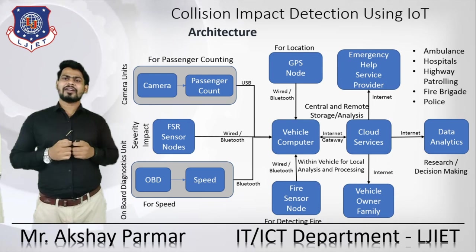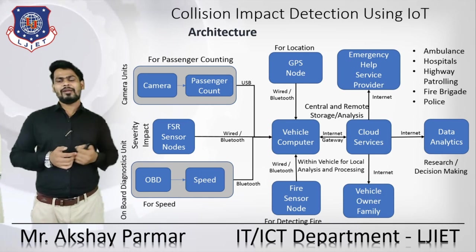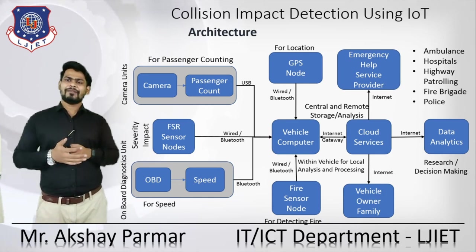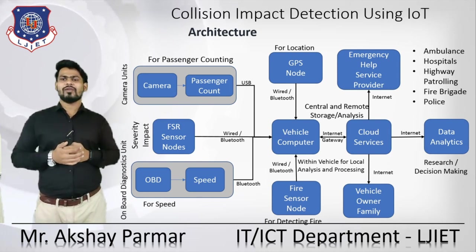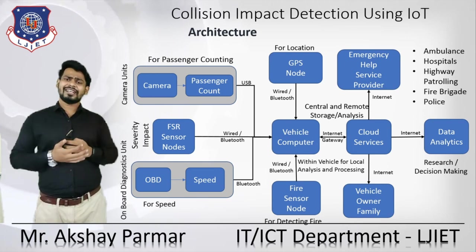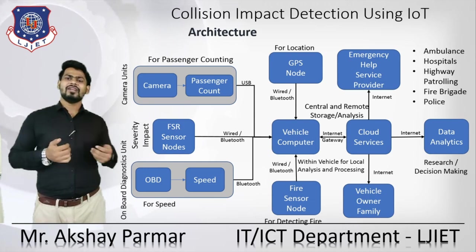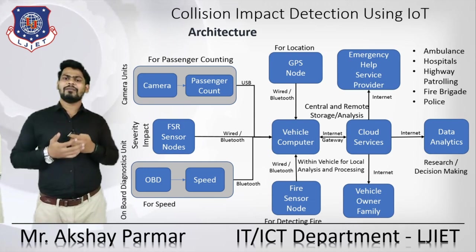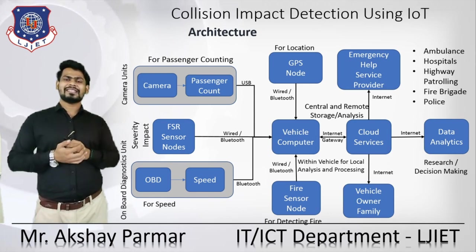Let's see the architecture of the collision impact detection using an IoT-based application. Here we are using two units — camera units and the OBD. With the help of the camera, we can count the number of passengers. With the help of the FSR sensor node, we can monitor the severity impact. The OBD keeps an eye on speed. All data is connected to the vehicle computer — the camera via USB, and the OBD and FSR via wired or Bluetooth technology. For location, we can use a GPS sensor connected in a wired manner.